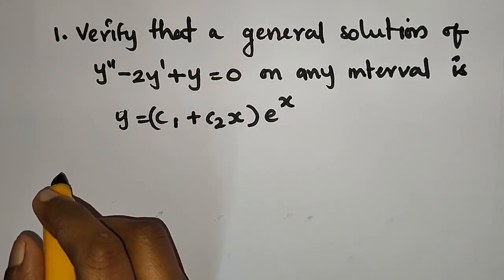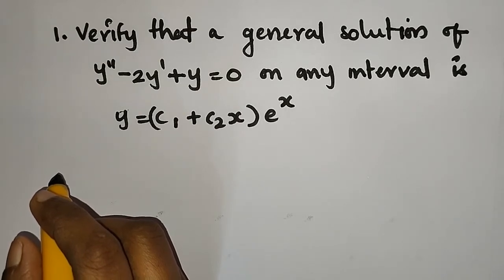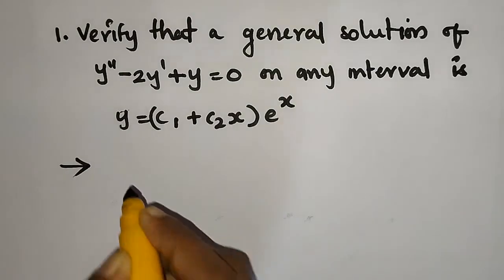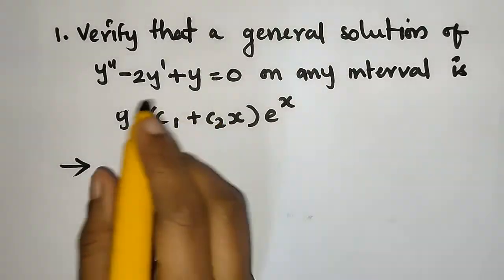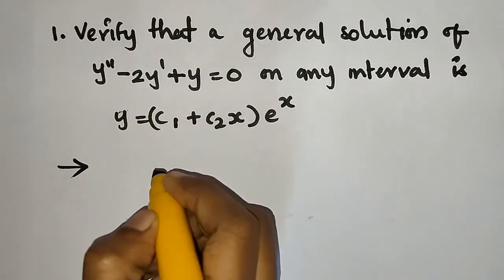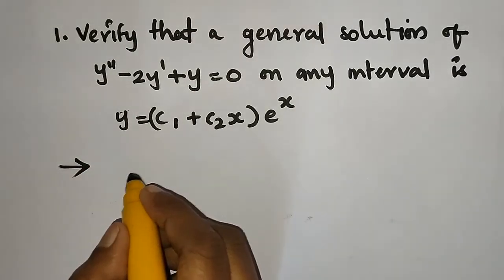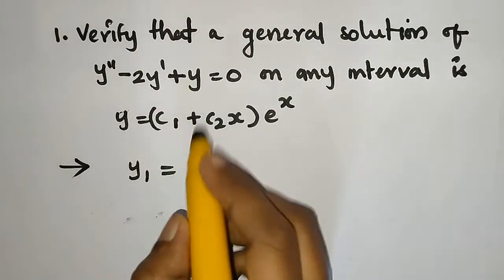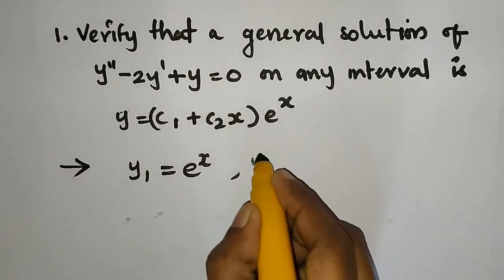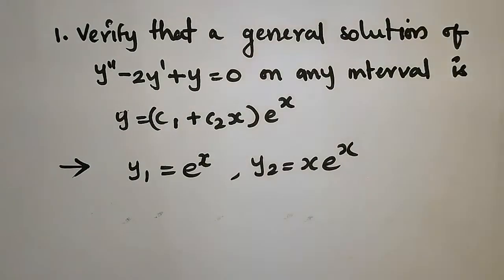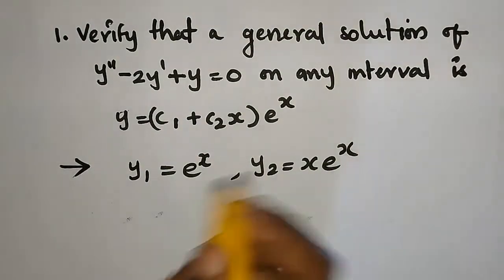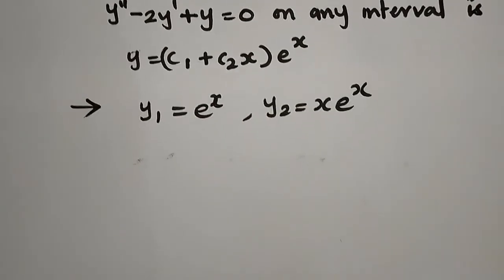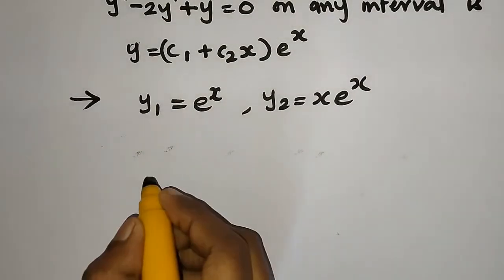We have a differential equation and a general solution, which means we have a basis. We can find this basis: y₁ = eˣ and y₂ = xeˣ. What we need to do is prove that y₁ and y₂ each satisfy the differential equation and form a linearly independent set.